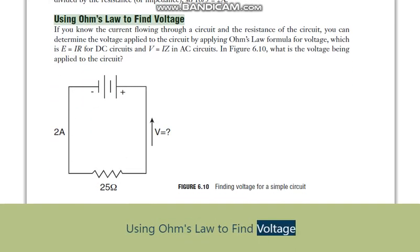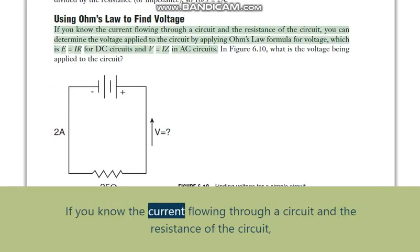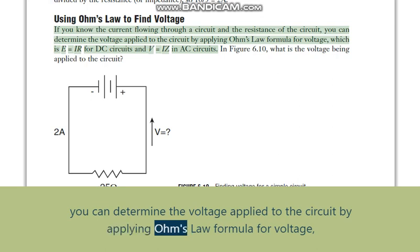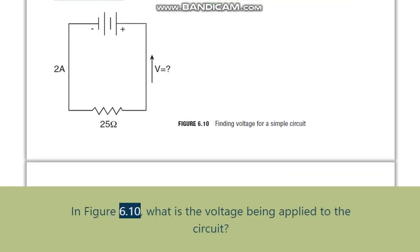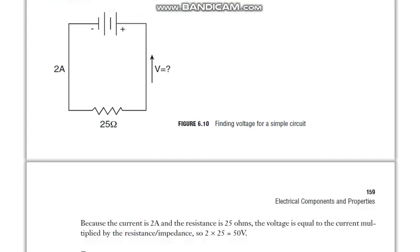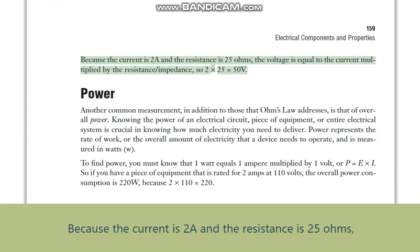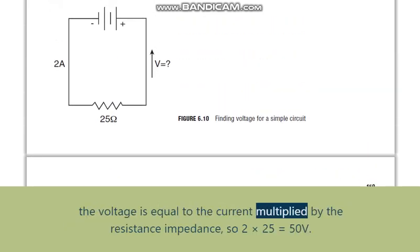Using Ohm's law to find voltage. If you know the current flowing through a circuit and the resistance of the circuit, you can determine the voltage applied to the circuit by applying Ohm's law formula for voltage, which is E equals IR for DC circuits and V equals IZ for AC circuits. In figure 6.10, because the current is 2A and the resistance is 25 Ohms, the voltage equals current multiplied by resistance: 2 times 25 equals 50V.